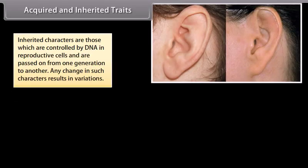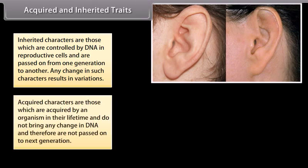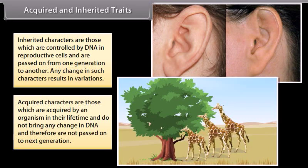Inherited characters are those which are controlled by DNA in reproductive cells and are passed on from one generation to another. Any change in such characters results in variations. Acquired characters are those which are acquired by an organism in their lifetime and do not bring any change in DNA, and therefore are not passed on to next generations.